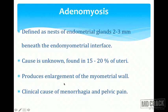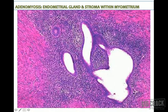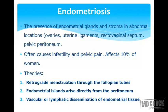Adenomyosis produces enlargement of the myometrial wall and patients clinically present with menorrhagia and chronic pelvic pain. The classical gross appearance is a trabeculated pattern with areas of hemorrhage — during menses, the ectopic glands within the myometrium also bleed, causing extensive hemorrhage. To diagnose adenomyosis, you must see both endometrial glands and accompanying endometrial stroma within the myometrium, at least one low power field beneath the endometrial interface.